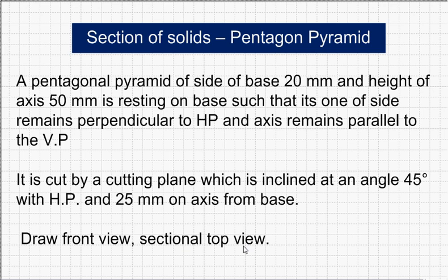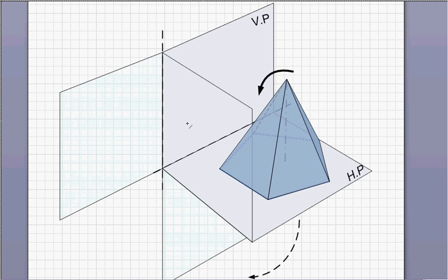If you try to visualize the position of the pentagon pyramid, it looks something like this. It is sitting on the horizontal plane, and this side here is perpendicular to the vertical plane. Its axis is parallel to the vertical plane - the base is perpendicular and axis is parallel to vertical plane.